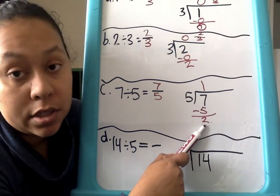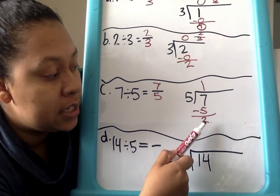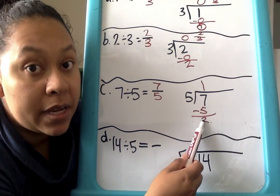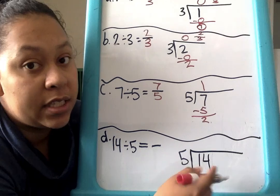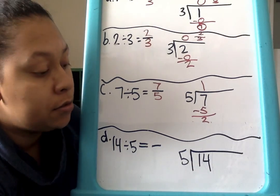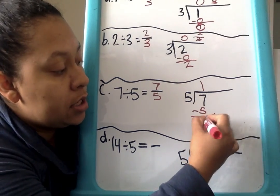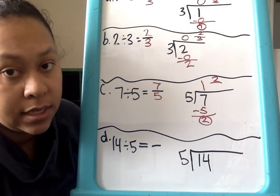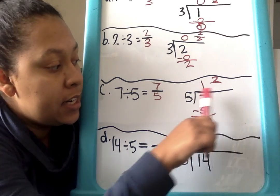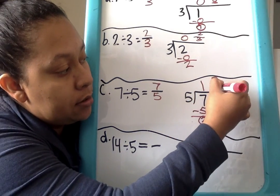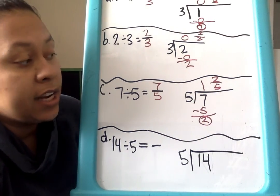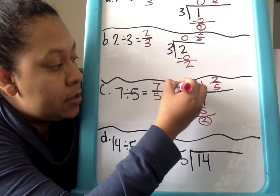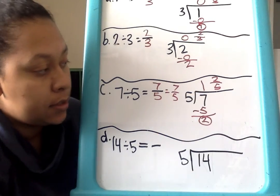So we have 2 pieces left over, and those 2 pieces will be split into fifths. But 5 is bigger than 2, so 5 cannot be multiplied to equal 2 — it's too big. So this is going to be our remainder. We put our remainder as a fraction because we can still split it, but it will be less than a whole. We have 2 pieces divided into fifths — so 2 fifths. The answer is 1 and 2 fifths, which is also equal to 7 fifths.